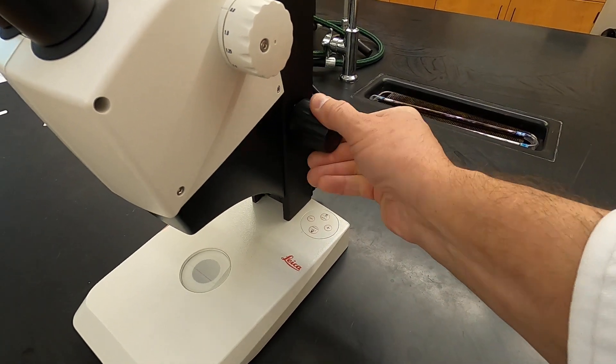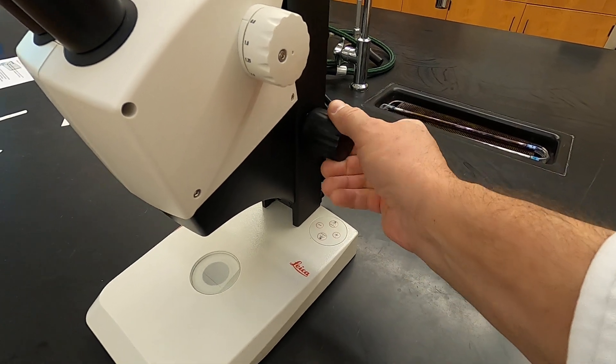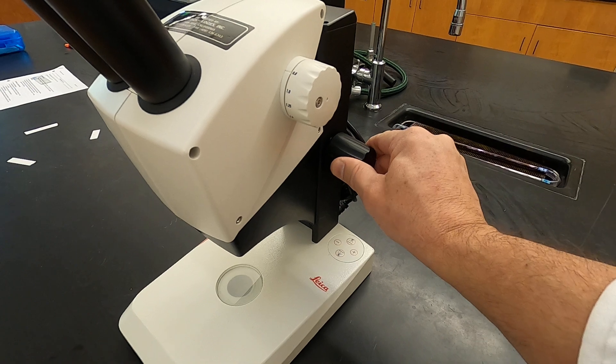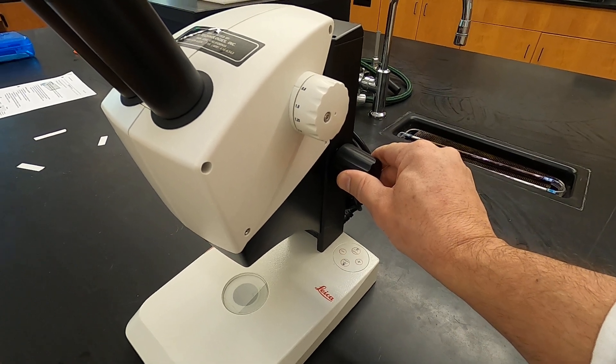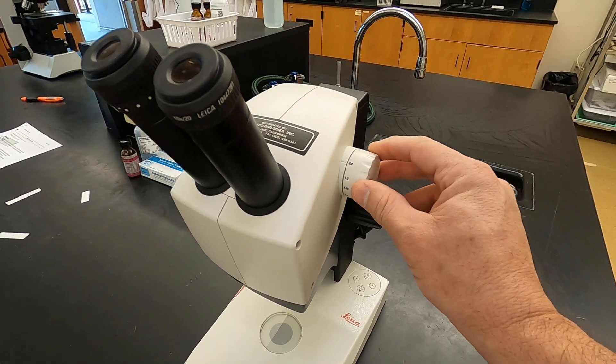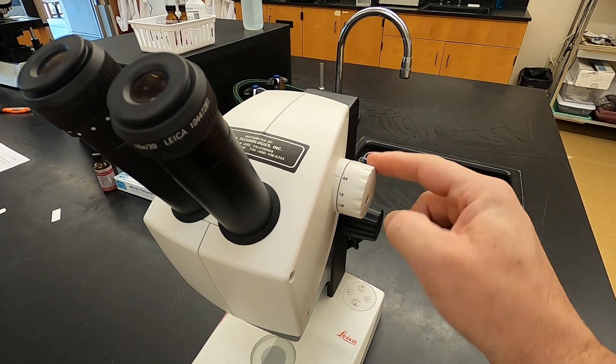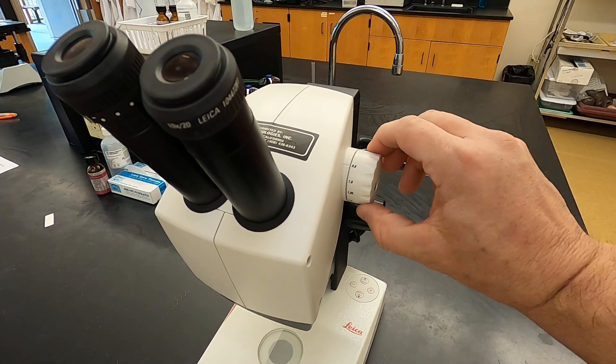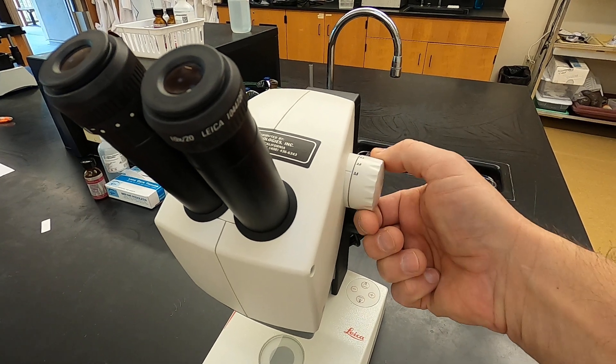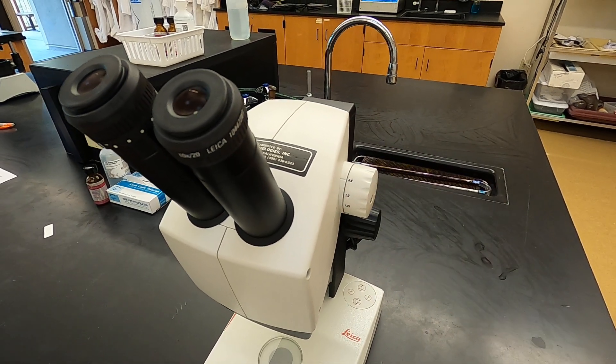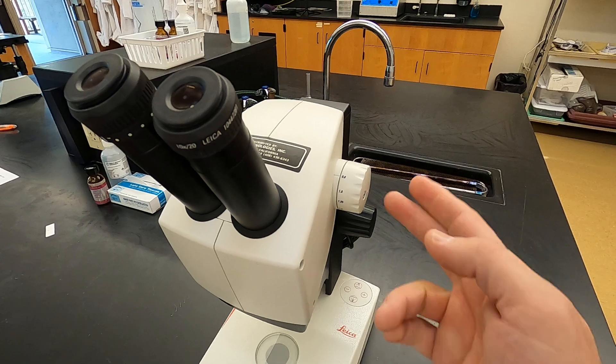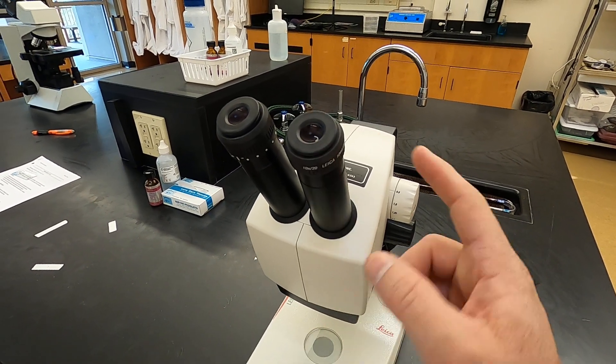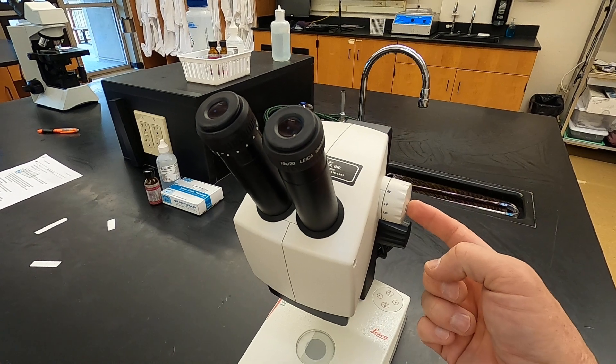These on the side of the arm here, this is your focus knob, and there's one on either side of the arm for you to use. And this right here is your magnification. The magnification here goes from 0.8 all the way up to 3.5. I'll explain in another video how we can calculate the total magnification given the power of your oculars and the power that this knob is set to.